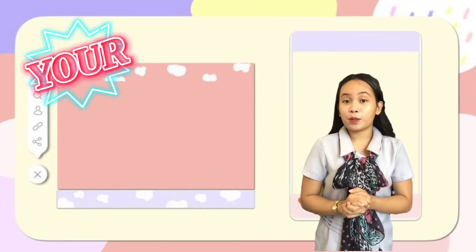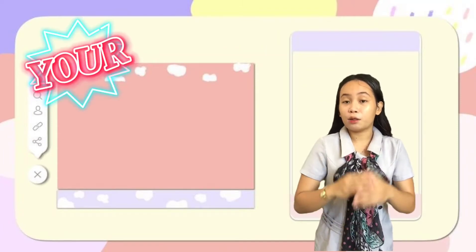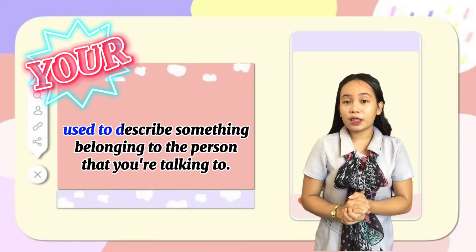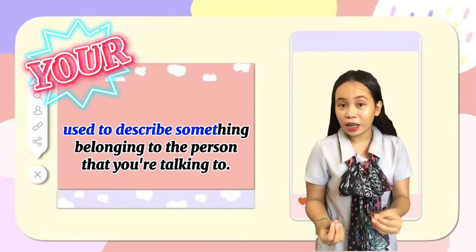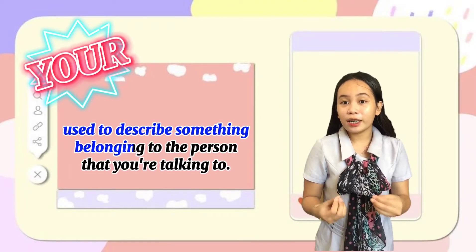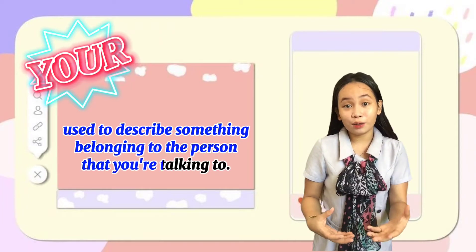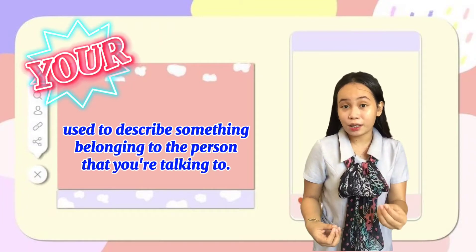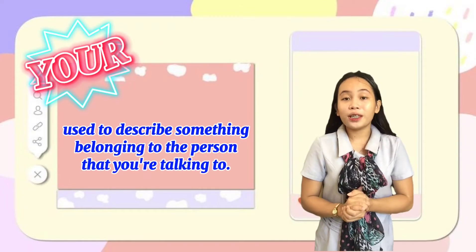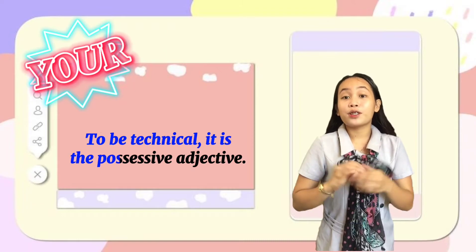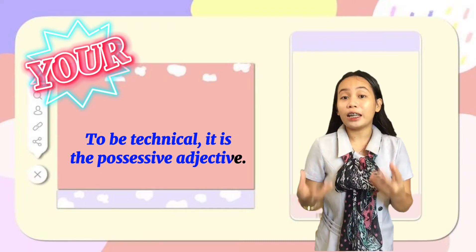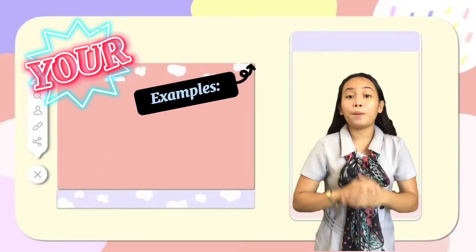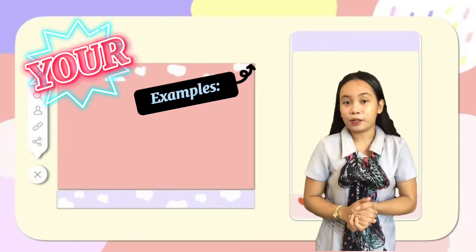For 'your,' spelled Y-O-U-R, it is used to describe something belonging to the person that you're talking to — the person that you're speaking to. To be technical, it is a possessive adjective. So now, let's look at some examples.